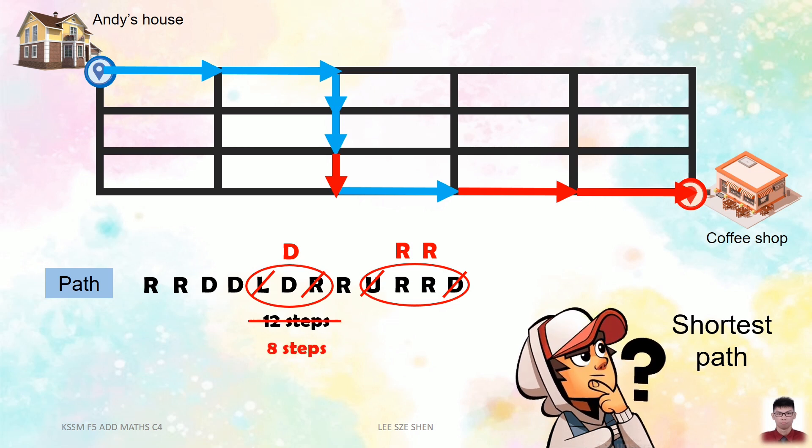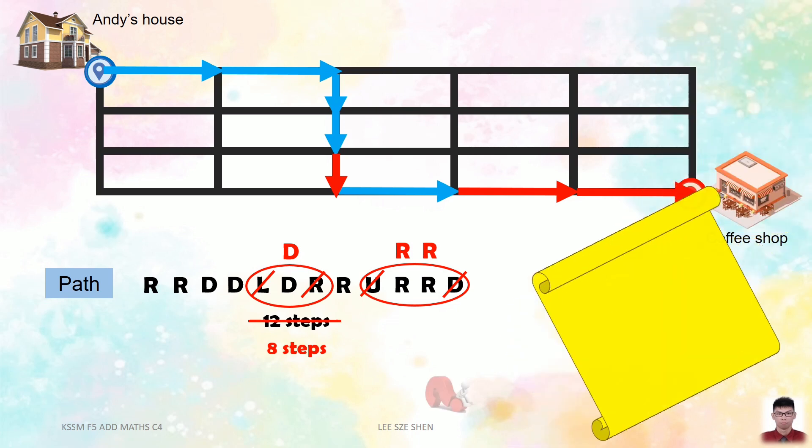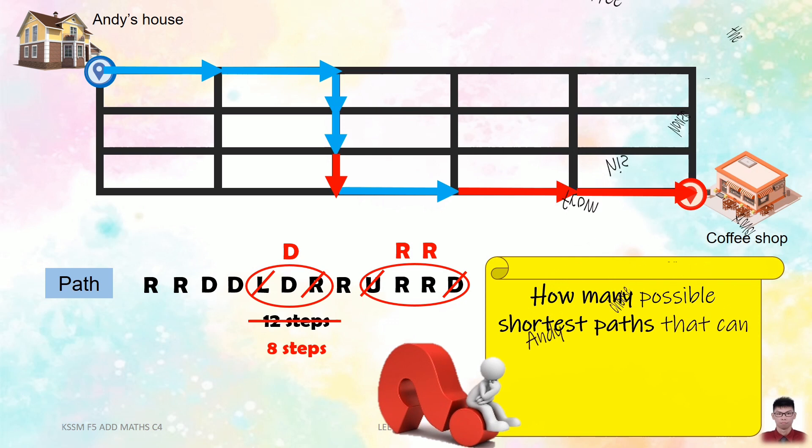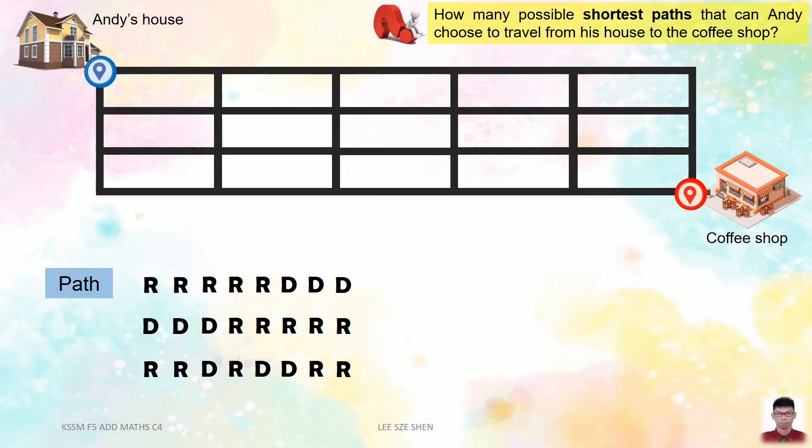So to have the shortest path, we should not take left or up direction. Big question. How many shortest paths can Andy choose to travel from his house to the coffee shop? The shortest path of 8 steps should only have right and down directions in our case, where we use R to denote right direction and D to denote down directions.